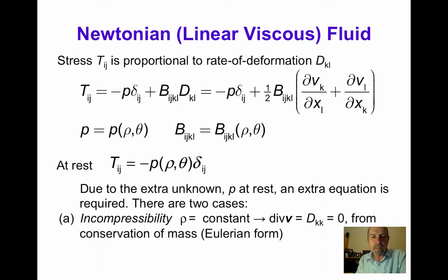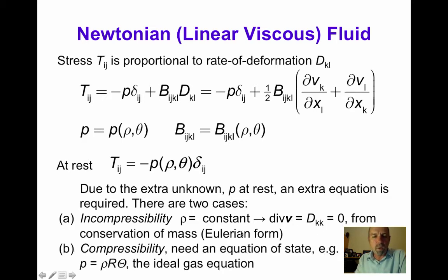The first case is incompressibility — the constraint that the density is constant — which from mass conservation gives us that the divergence of the velocity vector, or the trace of the rate of deformation tensor, is zero. Alternatively, if the fluid is compressible, then we need an equation of state, such as the ideal gas equation p equals ρRθ, where θ is the absolute temperature and R is the gas constant.